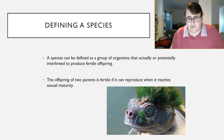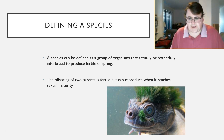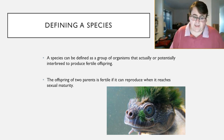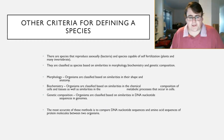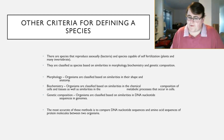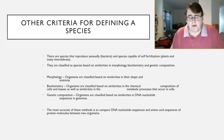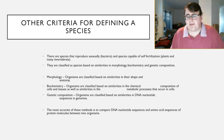That's not the only way possible to define a species, because obviously there are species that don't quite fit that definition. For example, many invertebrates and bacteria go through reproduction either asexually or by self-fertilization. Because of that, we can also define species based on morphology, biochemistry, and genetic composition.